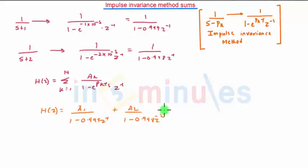We know the values which I have found out, A and B, that is minus 1 and 2. So we will write: minus 1 upon (1 minus 0.999 z raised to minus 1) plus 2 upon (1 minus 0.998 z raised to minus 1). This is the final answer.